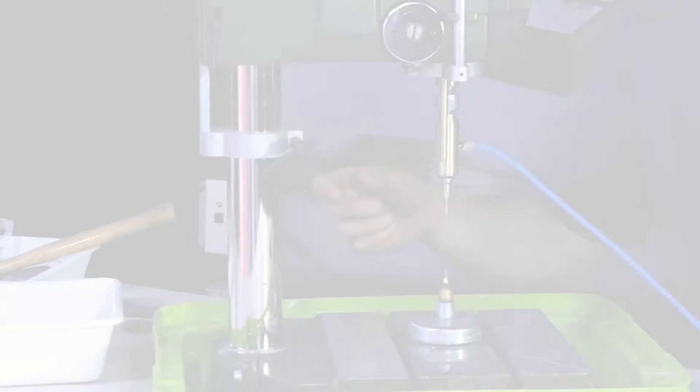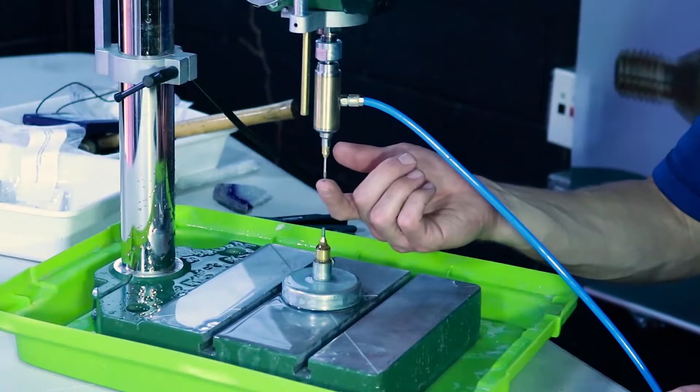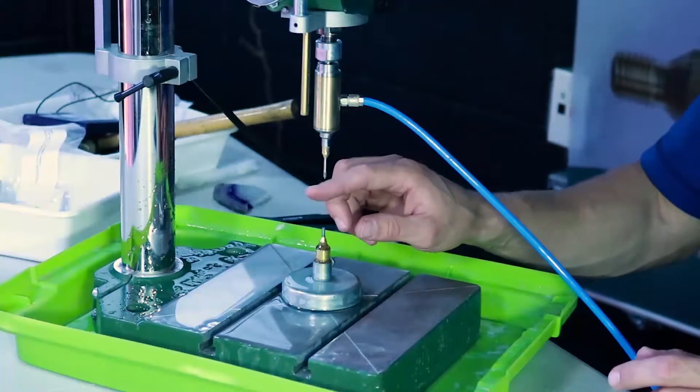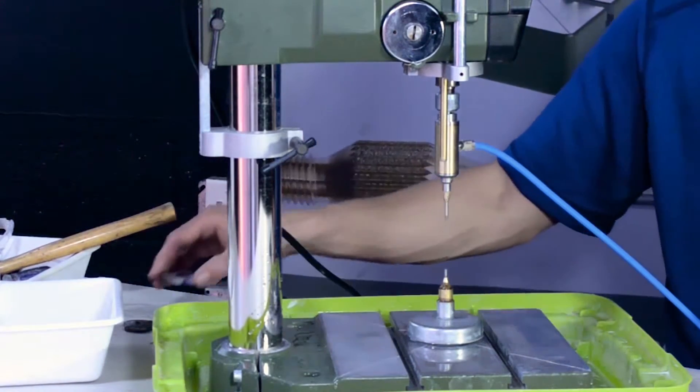What happens is as you're drilling, the ejector needle will hit before the cutting edge of the drill bit, and it will want to move your stone around. It's really hard to get a precise location to drill.